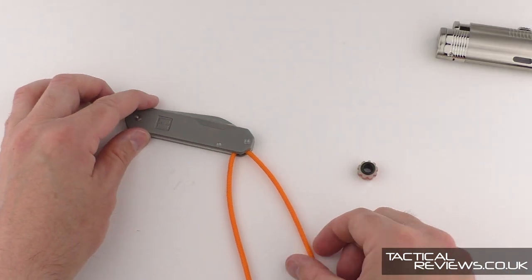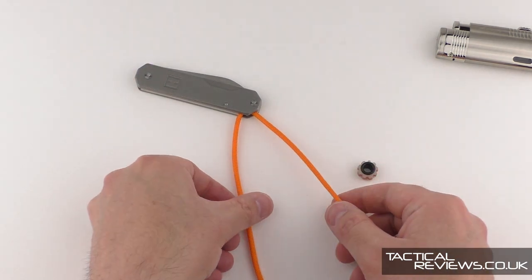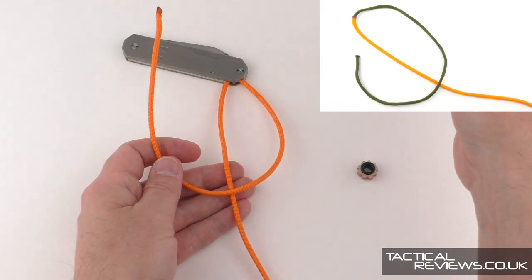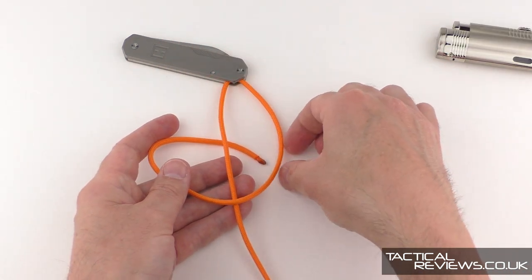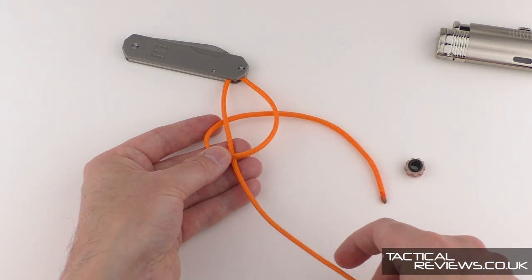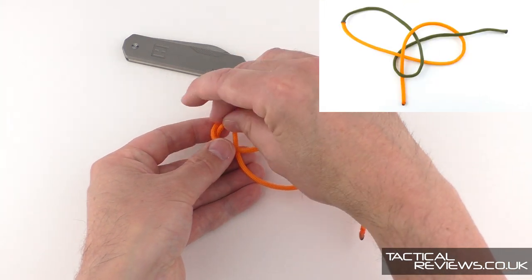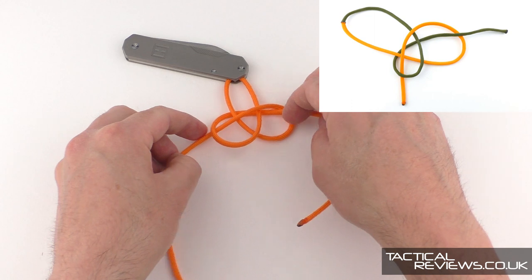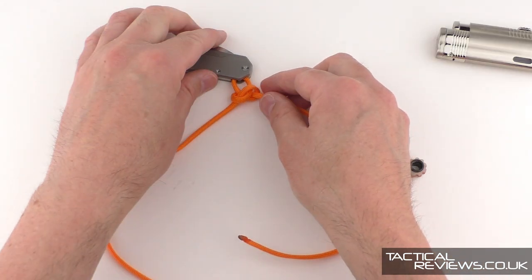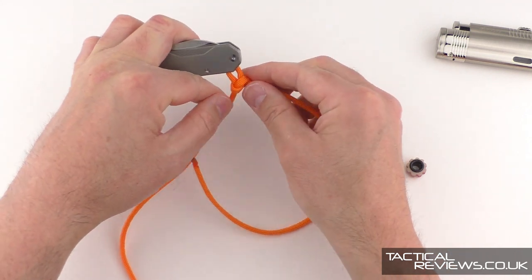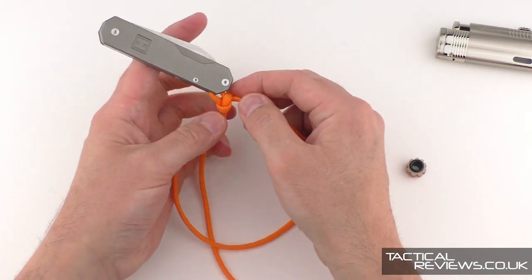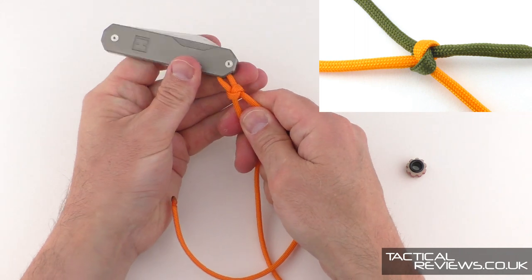Okay, so the snake knot. I'm going to try and talk this through, just going to run through the actual tying. What we're going to be doing is just a series of the same knot to build up part of the lanyard.